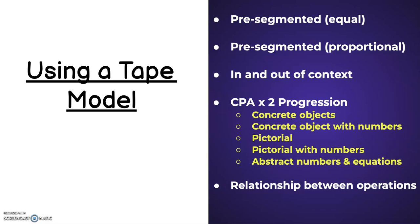These can be used in and out of a context, and obviously the CPA times two progression holds very true for a tape model. Starting with concrete objects directly on the tape model so they can build it. Then I can add concrete objects by putting numbers. Transition to a pictorial representation, so maybe they started by coming up with cubes of 10. Now I draw 10 cubes. Finally, instead of drawing 10 cubes, I may have transitioned to the point that I can just simply write the number 10 with the equation that matches. Finally, tape models are a wonderful way to reinforce the relationship between the operations.